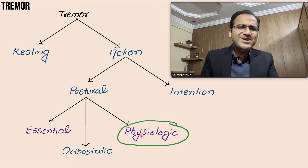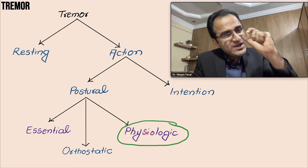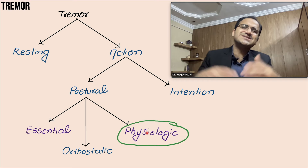The treatment of orthostatic tremor includes benzodiazepines and gabapentin. Coming to physiologic tremor — physiologic tremor is not an abnormal thing; it is a normal finding. Even if you focus on your hand, you will see a very small amount of tremor present. That is called physiologic tremor, and it does not need any treatment.